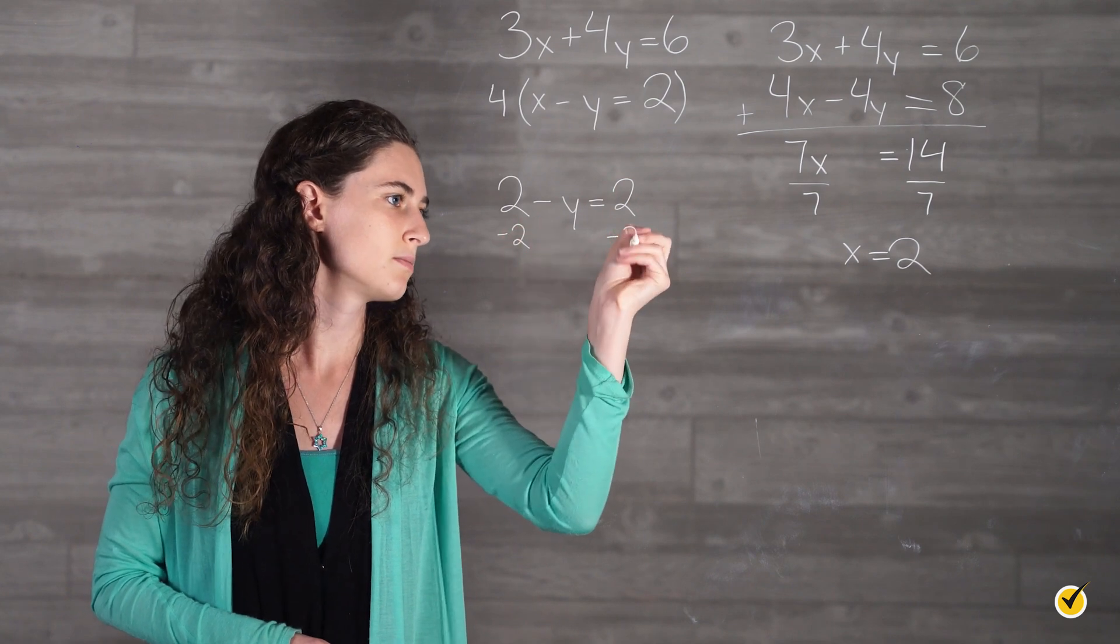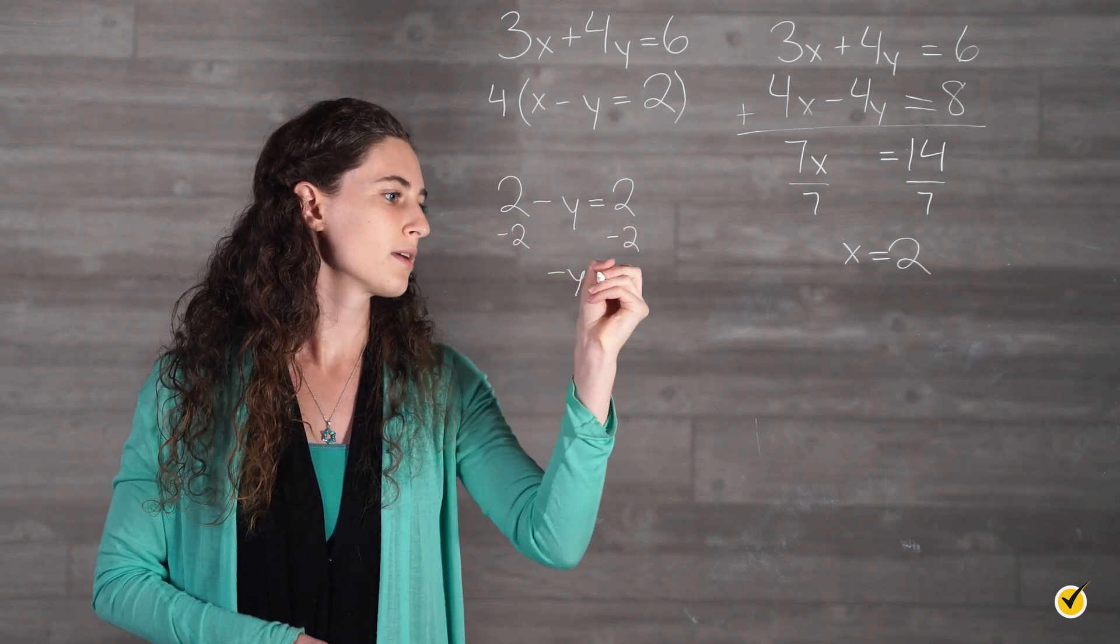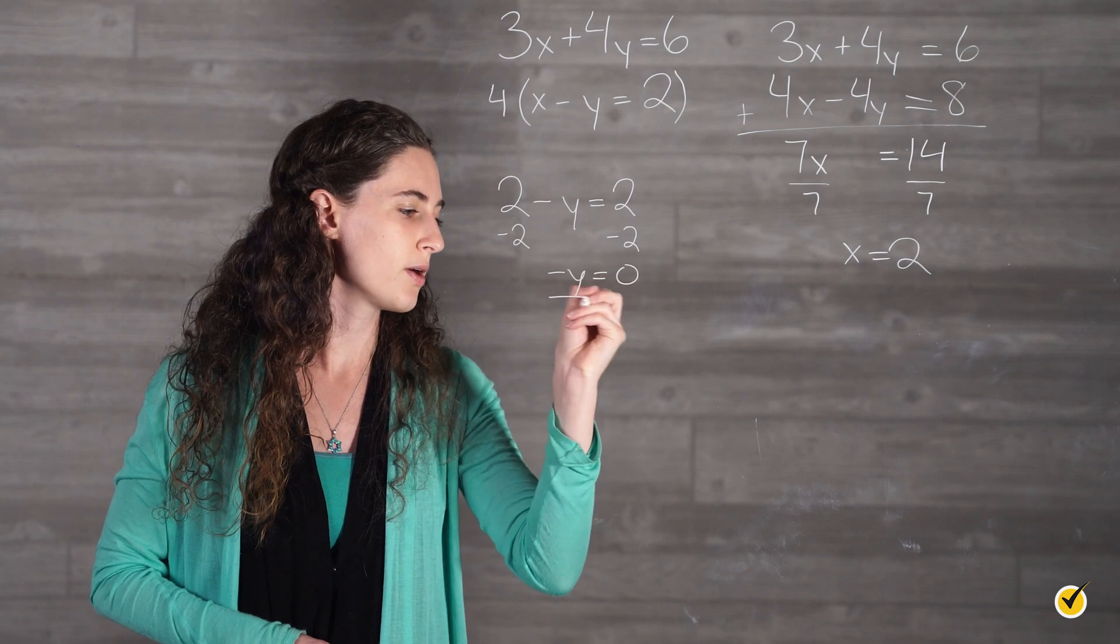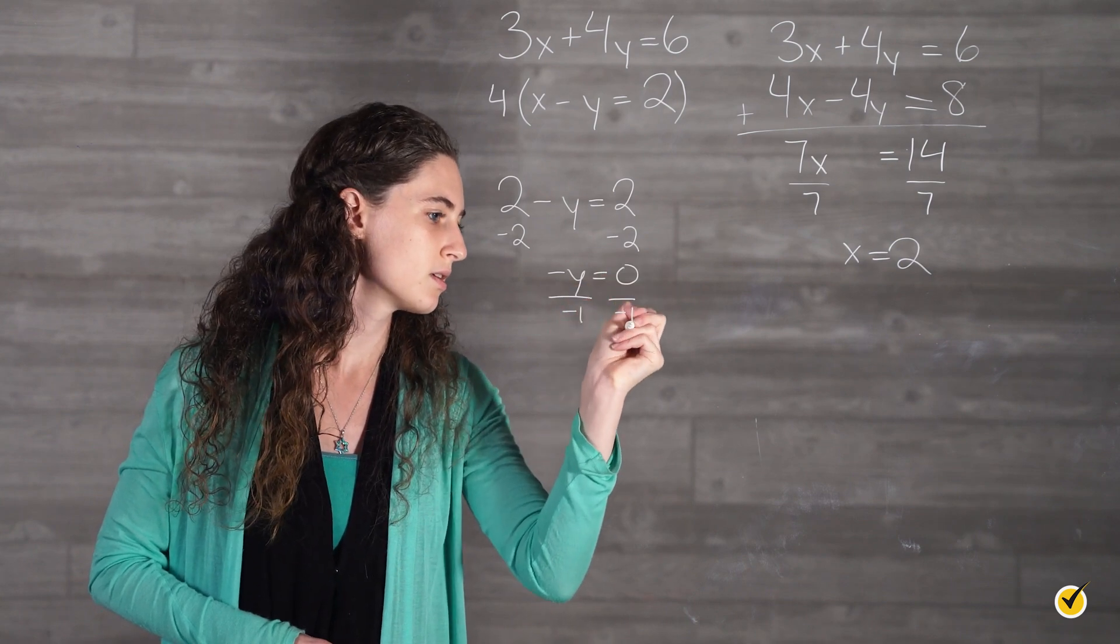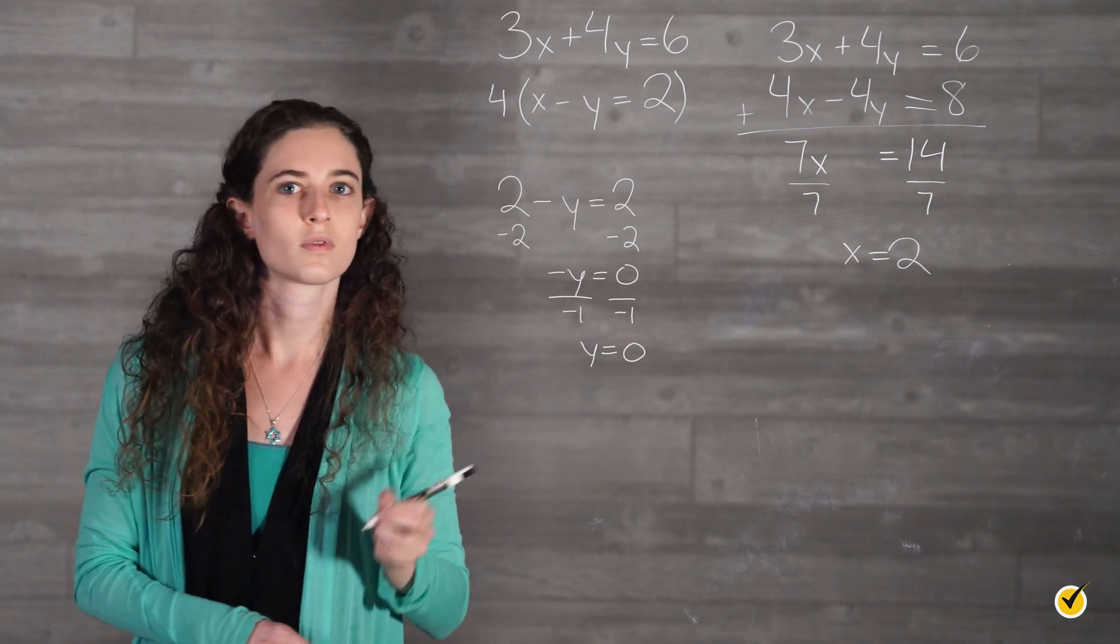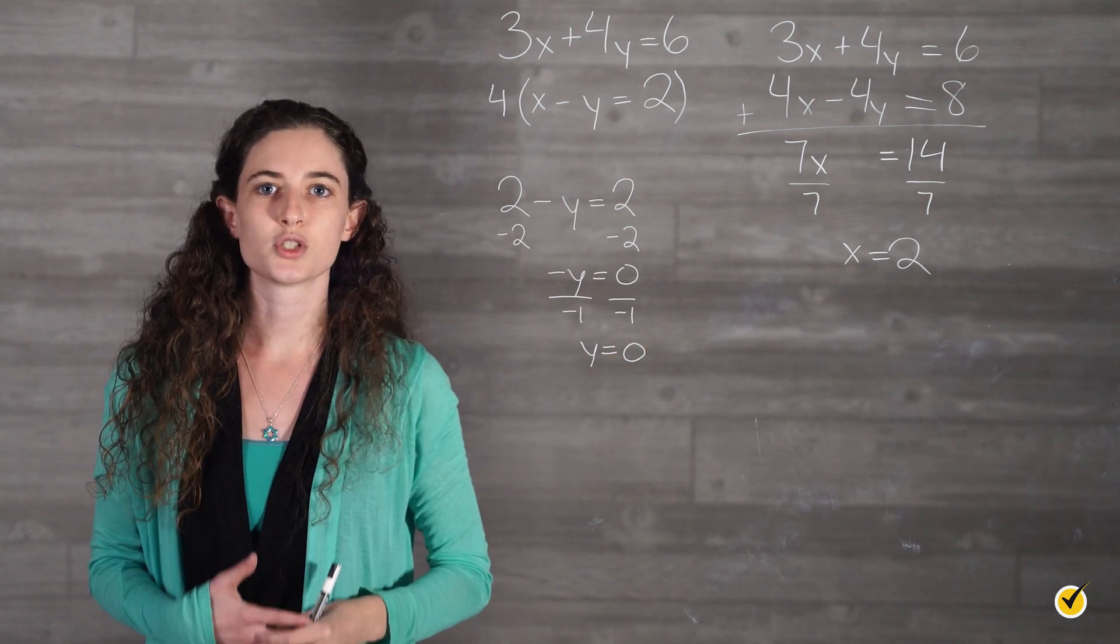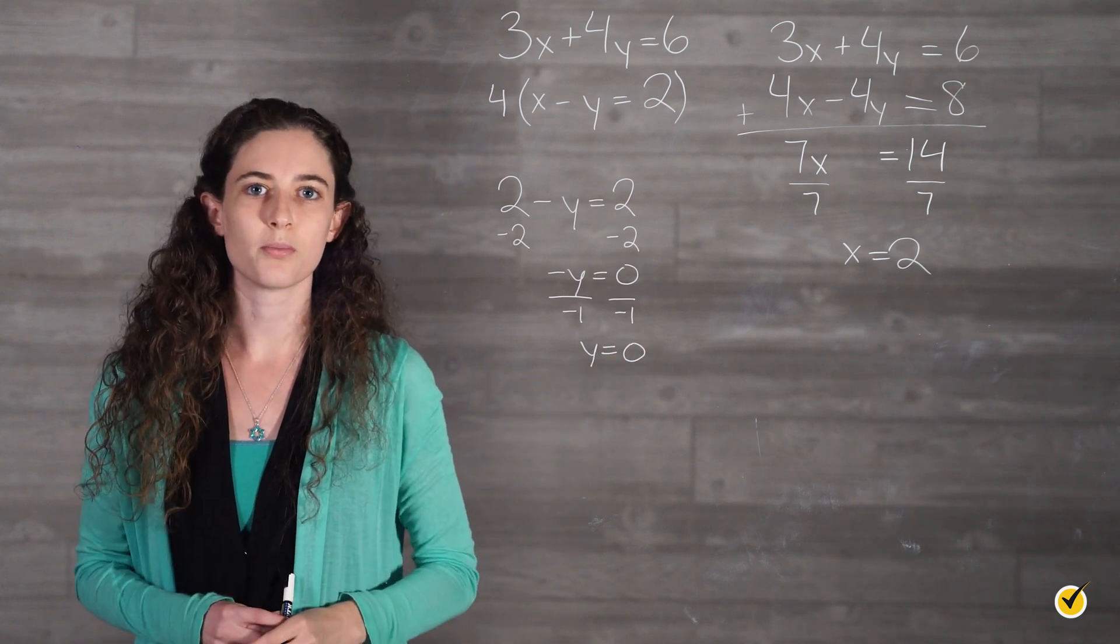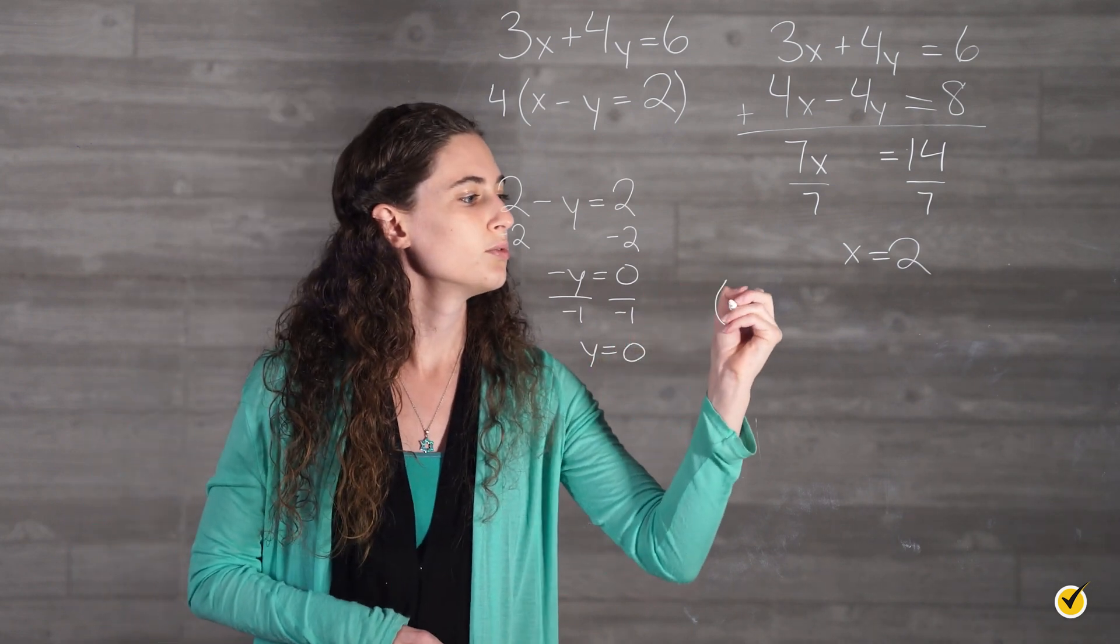Subtract 2 from both sides, negative y equals 0. And divide by negative 1 on both sides, y equals 0. Now all we have to do is write our answer in the form of a coordinate point: (2, 0).